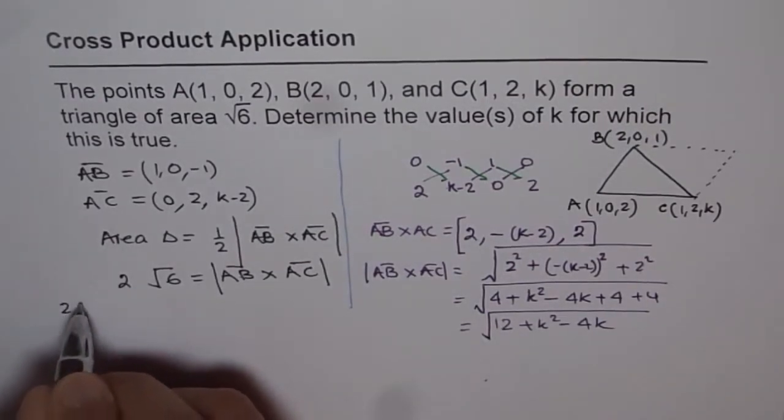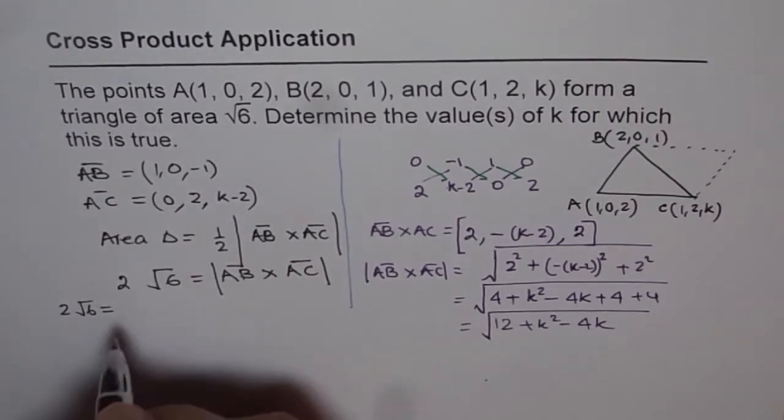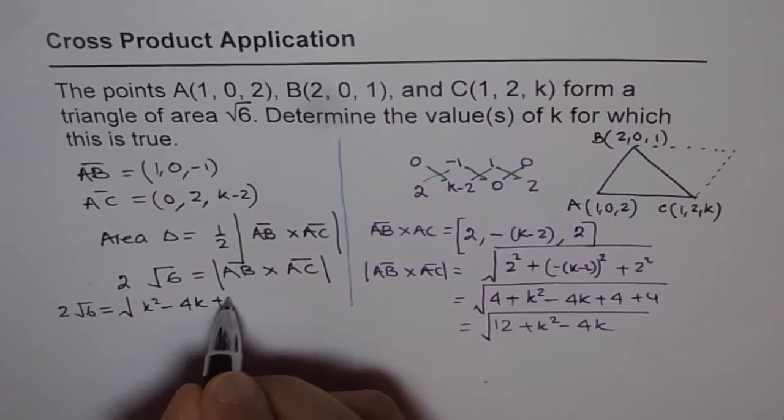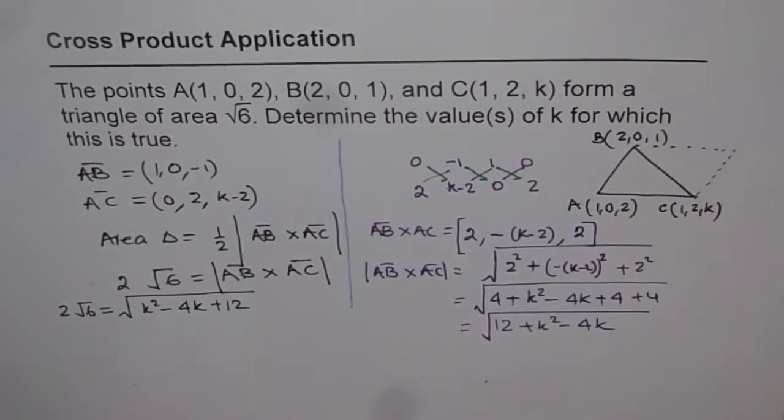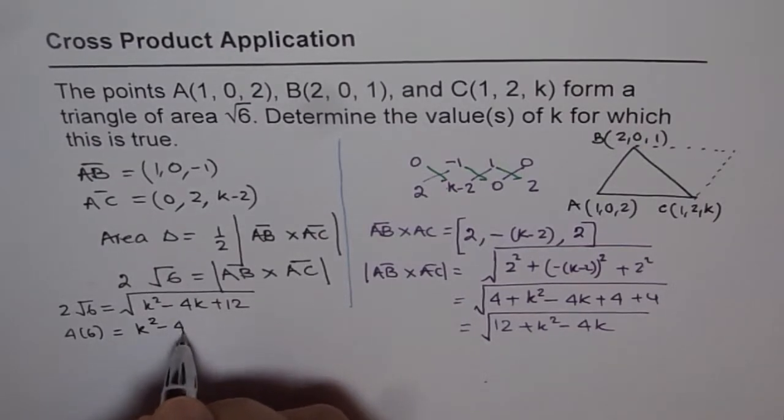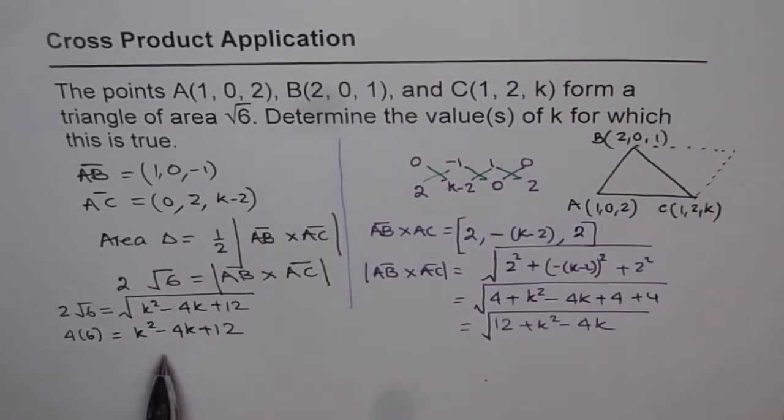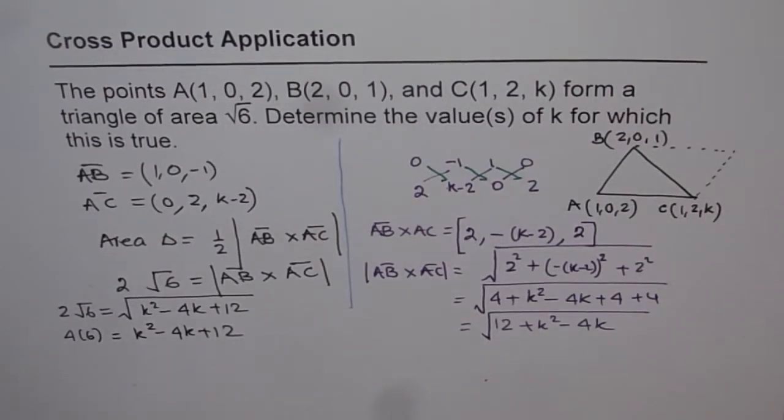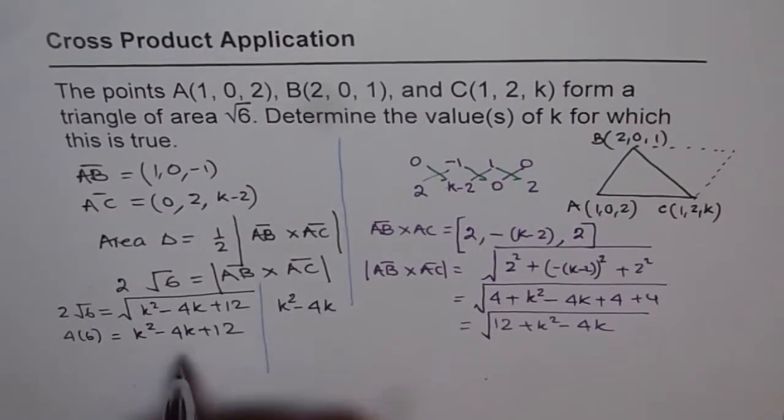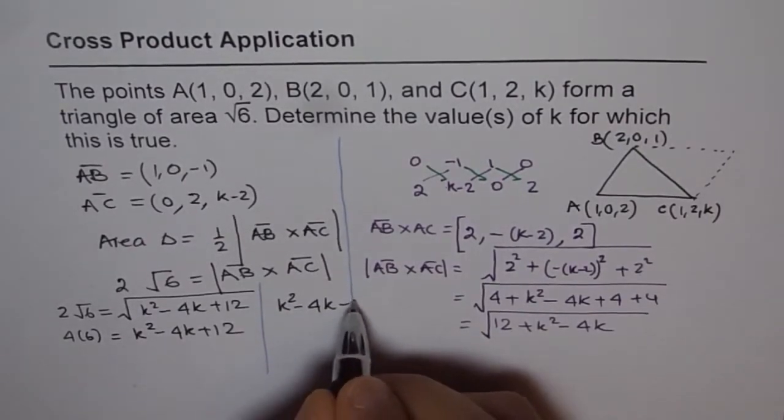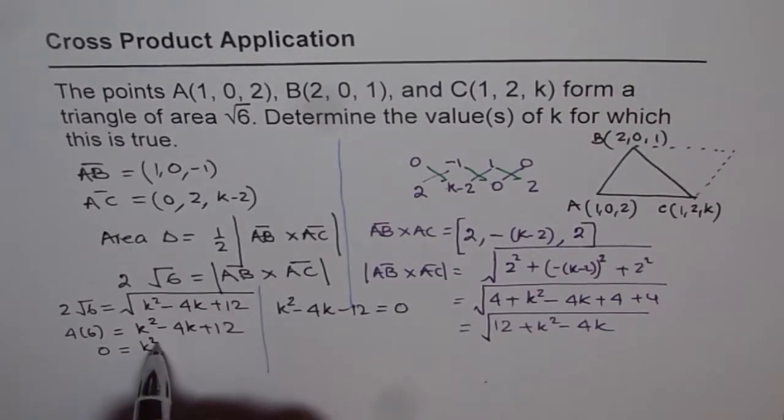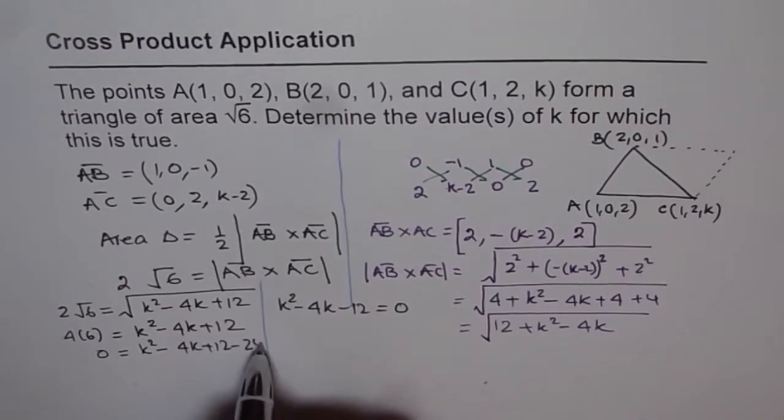So 2√6 = √(k² - 4k + 12). Squaring both sides: 4 × 6 = k² - 4k + 12. This gives us 24 = k² - 4k + 12. Reorganizing: k² - 4k + 12 - 24 = 0, which simplifies to k² - 4k - 12 = 0.